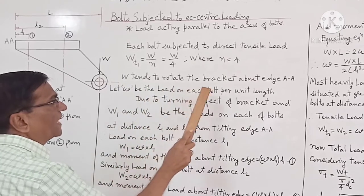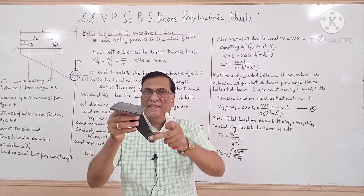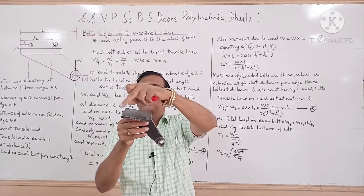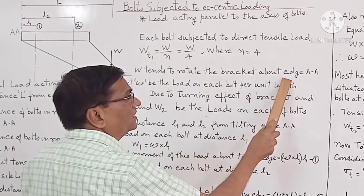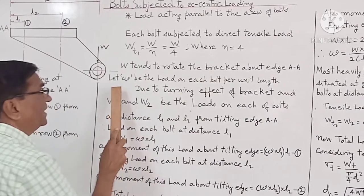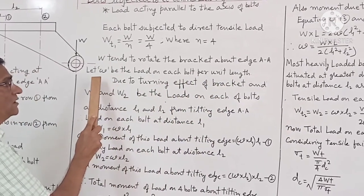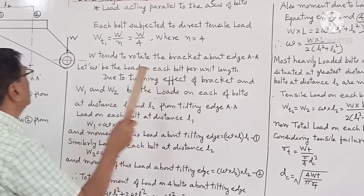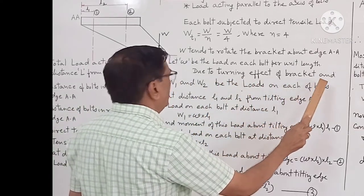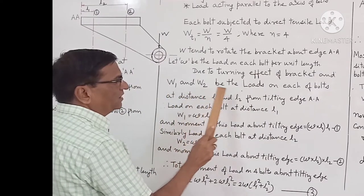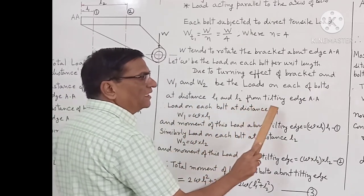W tends to rotate the bracket about the tilting edge AA. Let small w be the load on each bolt per unit length — this is the load on each bolt which changes with length. Due to the turning effect of the bracket, let W1 and W2 be the loads on each bolt at distances L1 and L2 from the tilting edge AA.